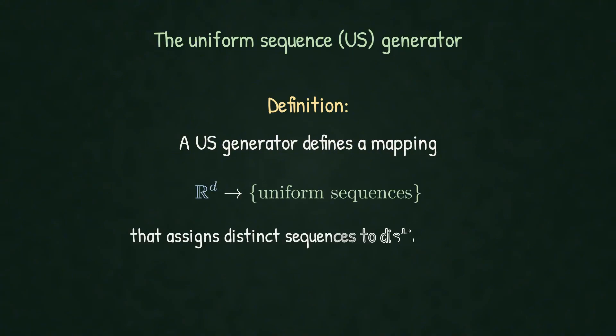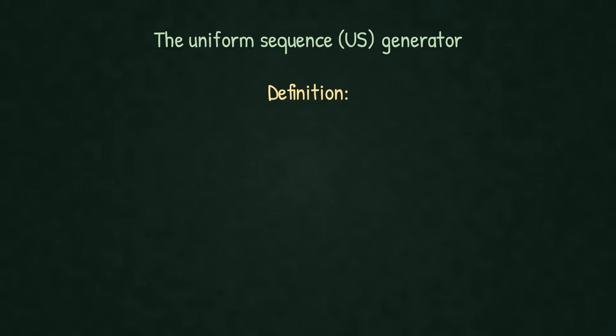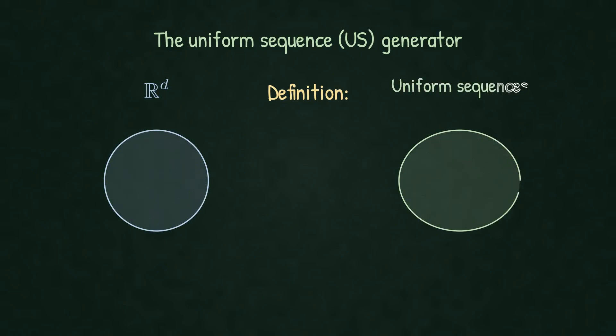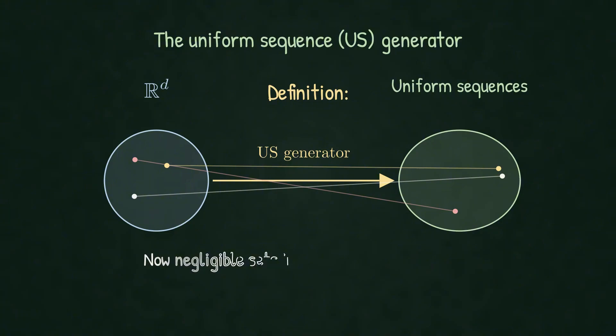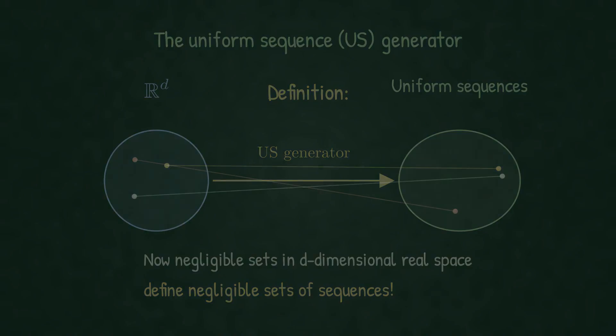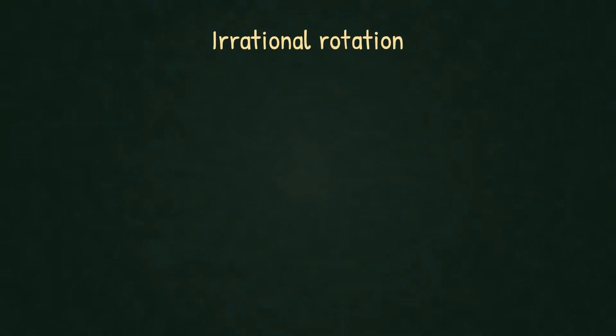We call this a uniform sequence generator. For each starting point x0 in d-dimensional real space, the generator produces a distinct uniform sequence. Now, negligible sets of starting points x0 in d-dimensional real space. The question is, does such a generator exist?